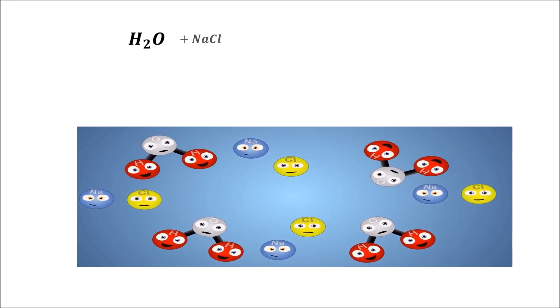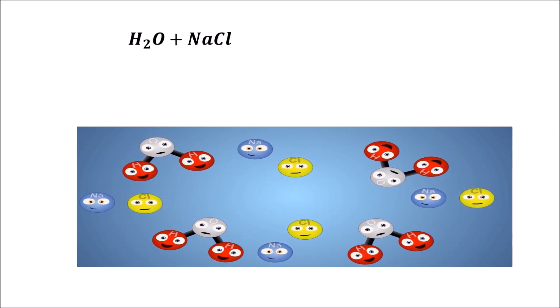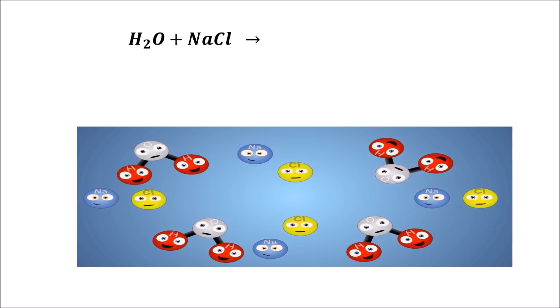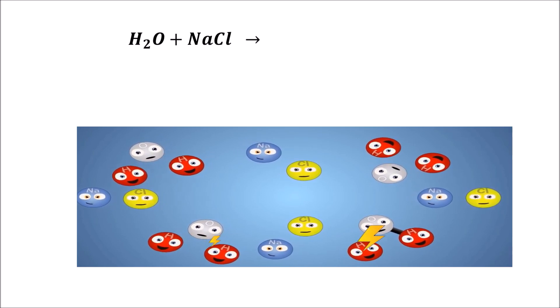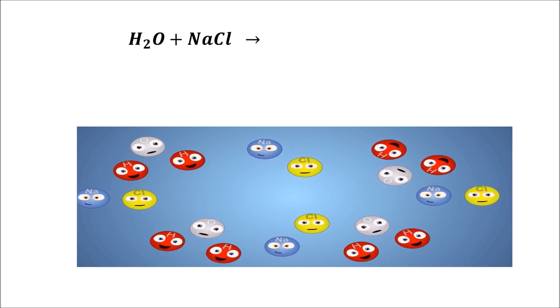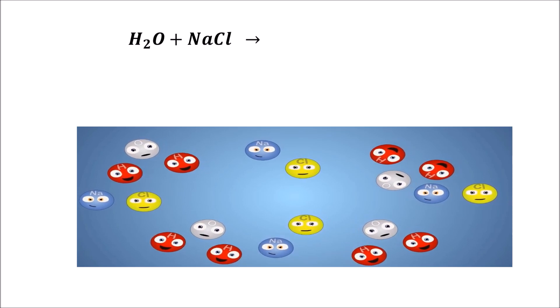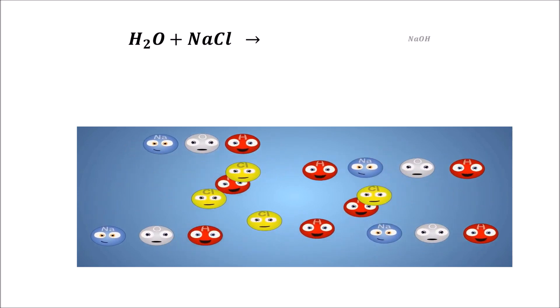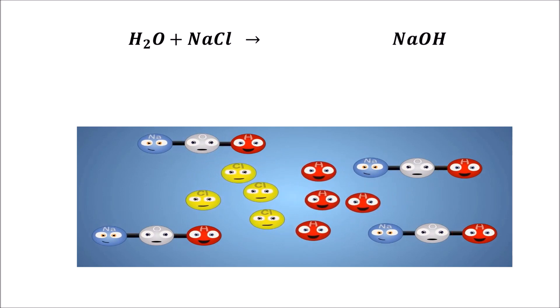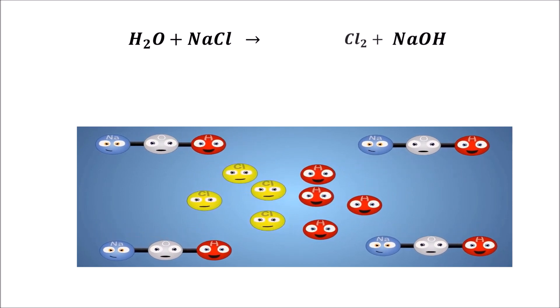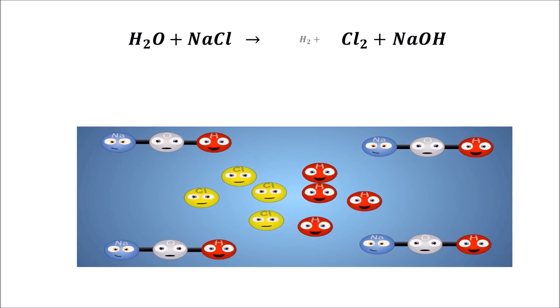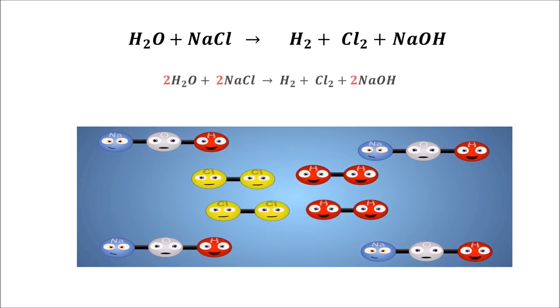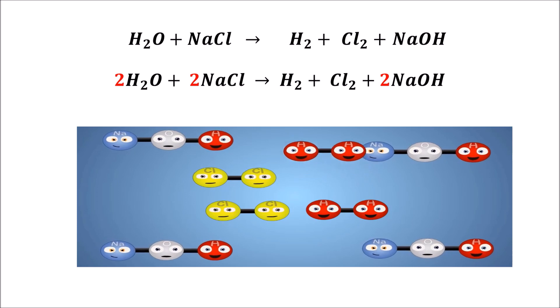So at first, we have water plus salt. Then, we put electricity, so it disconnects the molecule, and it rearranges the NaOH plus the chlorine gas and the hydrogen gas. That is electrolysis.